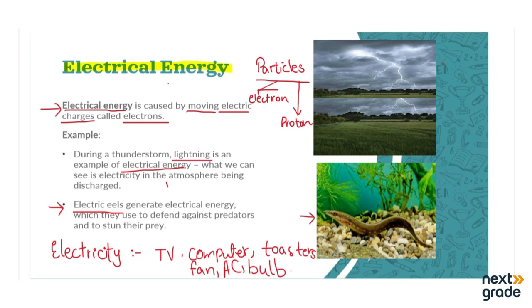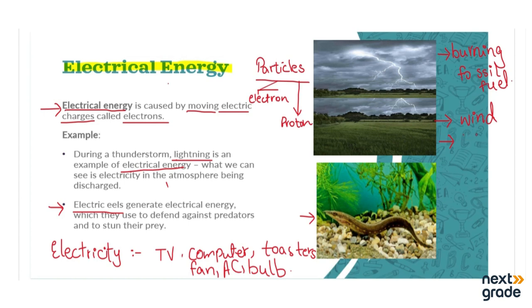How is it possible that electricity is supplied all over the world, to different houses and different places? It is actually generated by burning fossil fuels. In addition, electricity can also be created using the wind — wind turbines are a very common example. We have also covered dams, where using water we can generate electricity. In addition to that, solar energy — using the sun — can also be used to create electricity.